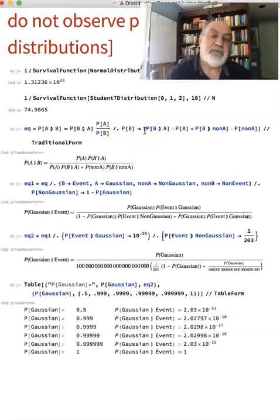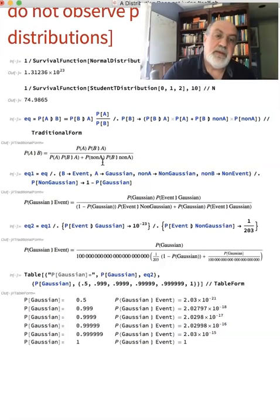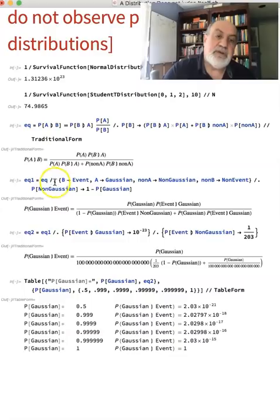P(B) equals probability B conditional on A times probability A, plus probability B conditional on non-A times probability non-A. So we get that standard Bayes rule, this expression where B is deconstructed. And then as equation one, I replace B with event, A with Gaussian, non-A non-Gaussian, non-B non-event, and probability of non-Gaussian is one minus probability of Gaussian. So now we want to see what's the probability of the data being Gaussian conditional on event.